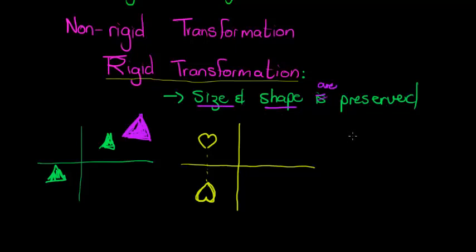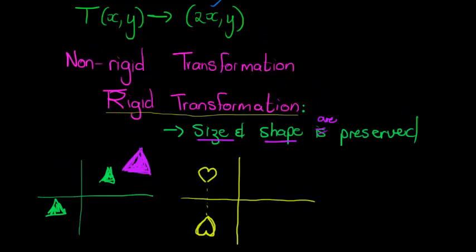That's it for this lesson. In the next lesson we'll look at rotations around the origin — basic rotations around the origin. What do you think: rigid or non-rigid? Let's find out in the next lesson.